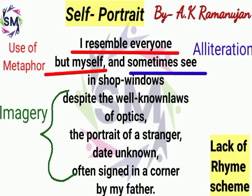Ramanujan's self seems temporary to himself, just as temporary as his portrait is. The expression 'sometimes' clearly shows hesitation or uncertainty in creating his own identity. After that, he talks about his own identity and sometimes seeing in shop windows.